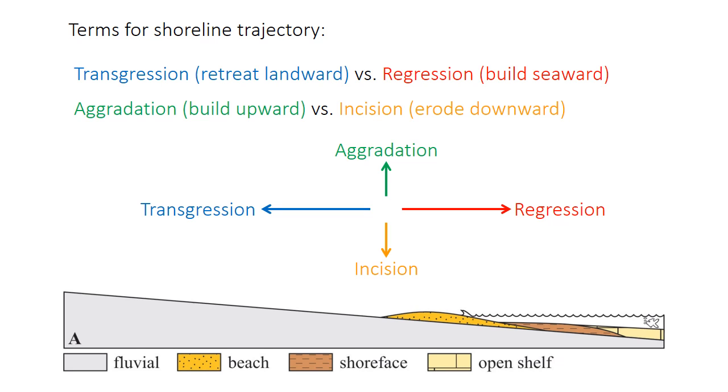The shoreline can either retreat landward. You can think of this basically as sea level rise, so that the beach moves onto the land from where it used to be. This type of shift is called transgression. The opposite is called regression, and that's where the coastline builds seaward or builds oceanward. Aggradation refers to the building up of the shoreline, whereas incision is it eroding downward. These terms are used the same way here as in the way that you previously encountered them in a fluvial system.